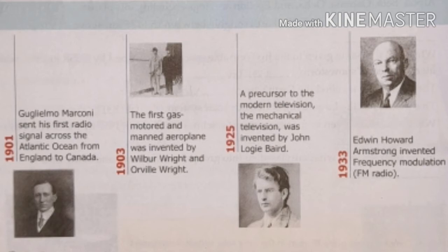The first gas-motored and manned aeroplane was invented by Wilbur Wright and Orville Wright — the Wright Brothers — in 1903. Yahan bhi kaha hai ki pehla gas motored aeroplane Wright Brothers ke dwara invent huwa tha.